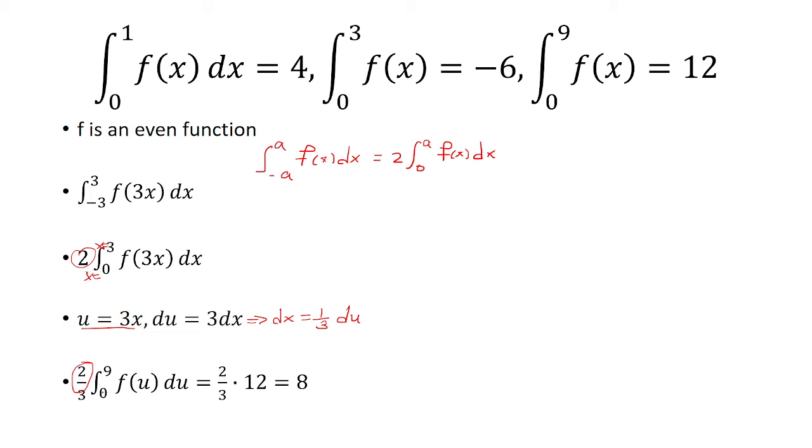So I have a 2 outside, and I multiply it by 1 third to get 2 thirds. And then my limit for the integral is 0 to 9. Now, this thing is the same thing as just saying integral from 0 to 9 f of x dx, which is given to us as 12. So we take 2 thirds of 12, and that's going to give us 8.